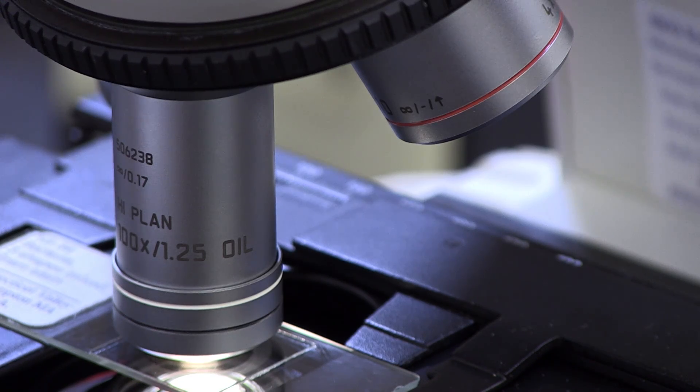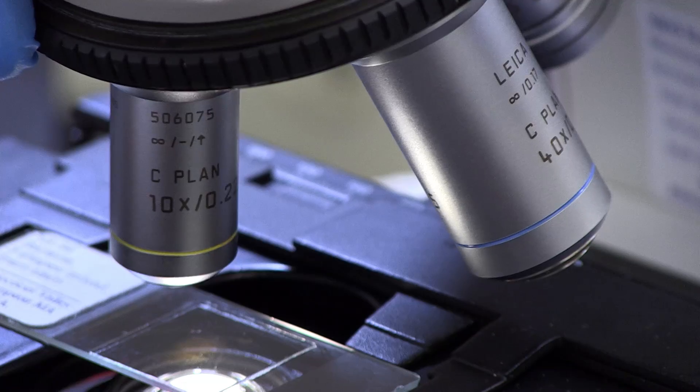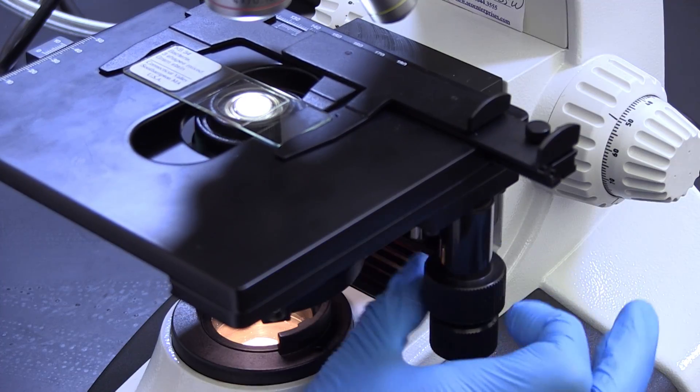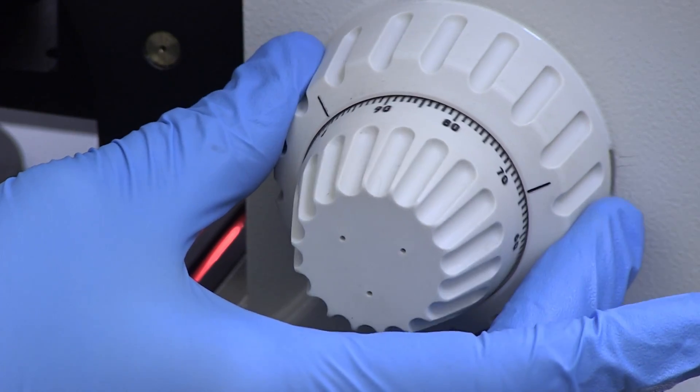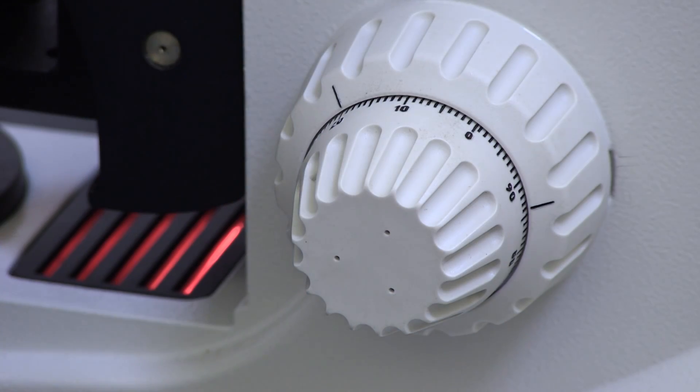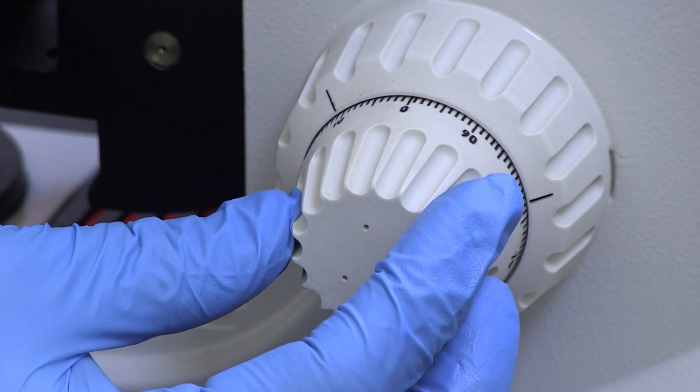Move the lowest power objective, usually 4x, into position, listening for an audible click as it slips into place. Scan the slide until you see the field of view. Bring the image into focus using first the coarse focusing knob and then the fine focusing knob to obtain the sharpest possible image.